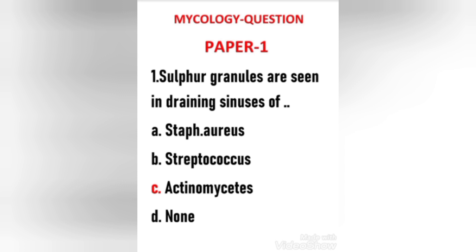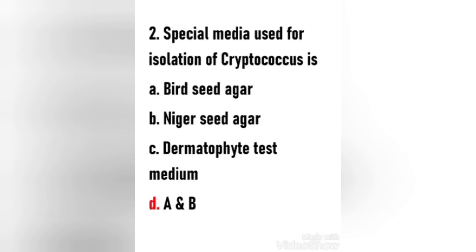First question: Sulphur granules are seen in draining sinuses of — Staph aureus, Streptococcus, Actinomyces, or none? The right answer is option C, Actinomyces. Once Actinomyces species have invaded tissue, they develop a chronic granulomatous infection characterized by the formation of tiny clumps called sulphur granules because of their yellow color. Sulphur granules are aggregates of microorganisms with inflammatory debris. Granules vary in color and size.